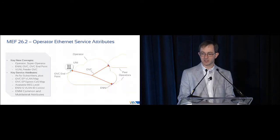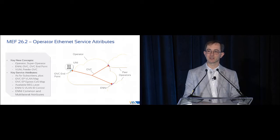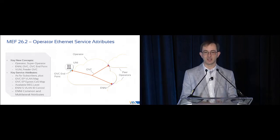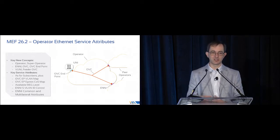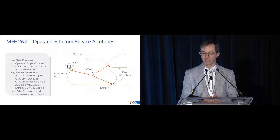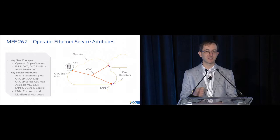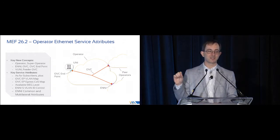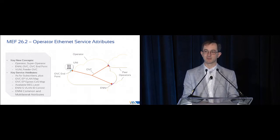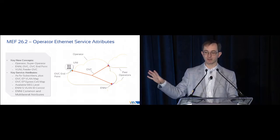On the operator side, MEF 26.2 is the operator Ethernet service attributes standard. This introduces some new concepts: operators and super operators — super operators being a relatively new thing to allow a hierarchy of relationships — as well as ENIs between operators, OVCs and OVC endpoints, and VUNI and feeder OVC, which used to be in a separate standard but have been folded in together. A key addition is the egress class of service map: how am I going to mark packets sent to another operator to indicate the class of service, so they can map them back into their own classes of service.